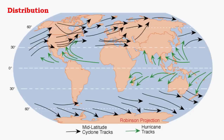Now let us look at the distribution of temperate cyclones. A map shows the distribution of both tropical and temperate cyclones — the green ones are tropical cyclones, while the black lines indicate the path of temperate cyclones. It is clearly visible that the temperate cyclones move from west to east because of the westerly movement of the jet stream and the westerly winds in the temperate region, whereas tropical cyclones have an east-to-west flow.